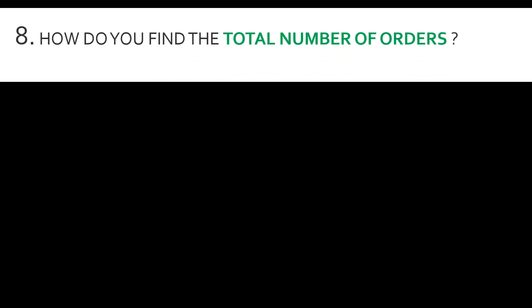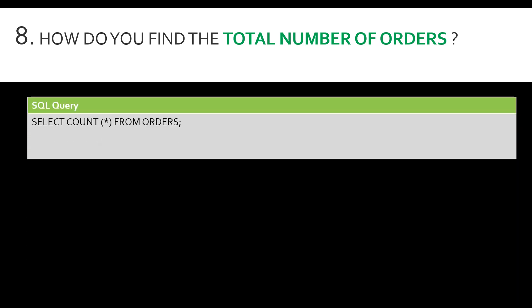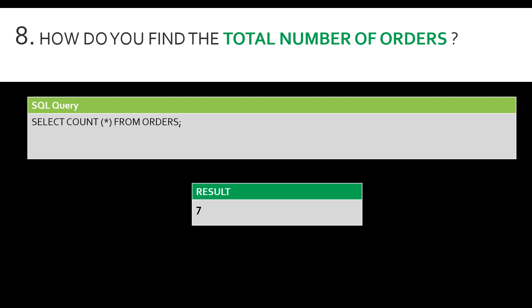Question number eight: how do you find the total number of orders? The interviewer might ask how to find the total number of orders in the database. The syntax is SELECT COUNT(*) FROM orders, which gives you the number of records in the table. In our case study we had seven records, so the result would return seven.